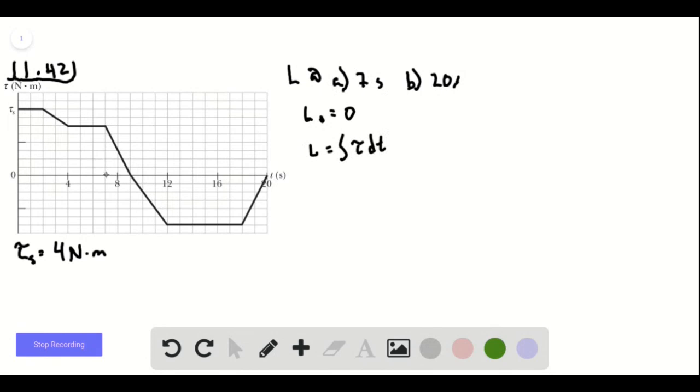To get our torque up to 7 seconds, we just find all of this area geometrically in here. And doing that, we find that at 7 seconds, it's 24 kilogram meters squared per second.